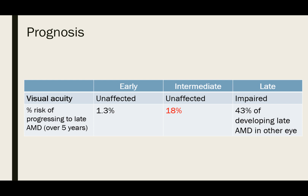Lastly, let's briefly discuss prognosis. The numbers in the table represent the percentage risk of developing late-stage AMD within five years. Patients with early AMD have a very low risk, but this jumps up to nearly 20% — one in five patients — for those categorized as having intermediate AMD. The percentage for late AMD represents the risk of the other eye progressing to late AMD if it hasn't already done so.